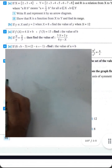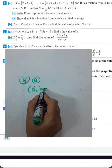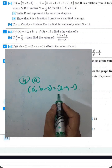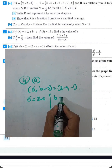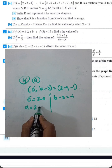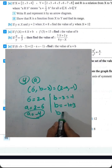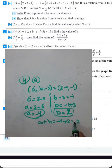Question number 4, letter a: given the ordered pair (6, b) and (a, -1) with 6 equals 2 minus a and b minus 3 equals negative 1. Solving: a equals 2 minus 6 equals negative 4, and b equals negative 1 plus 3 equals 2. Then a plus b equals negative 4 plus 2, which equals negative 2.